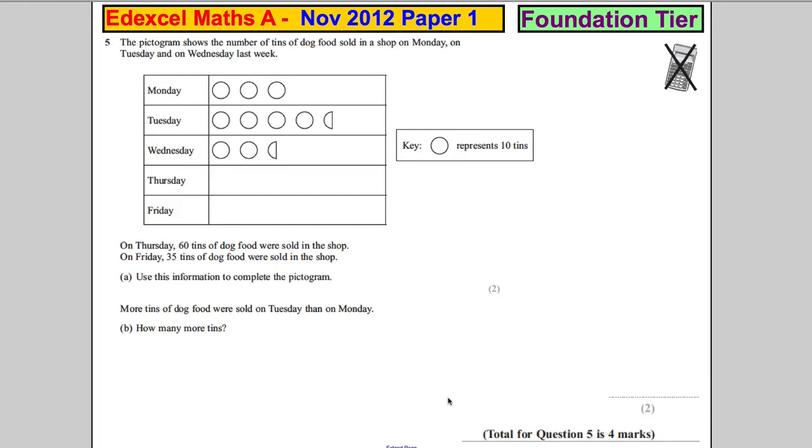Question 5. The pictogram shows the number of tins of dog food sold in the shop on Monday, Tuesday and Wednesday last week. The important thing about this diagram is to read the key. It says that every time you see a whole circle, it represents 10 tins.